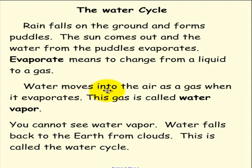Water moves into the air as a gas when it evaporates. This gas is called water vapor. You cannot see water vapor. Water falls back to the earth from clouds. This is called the water cycle.